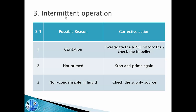The third problem is intermittent operation. The reason could be cavitation, and we need to check the impeller mechanically. Maybe the pump is not properly primed, so we need to stop, check, and prime it again. Maybe non-condensables are coming with the liquid, and in that case we need to check our supply sources.